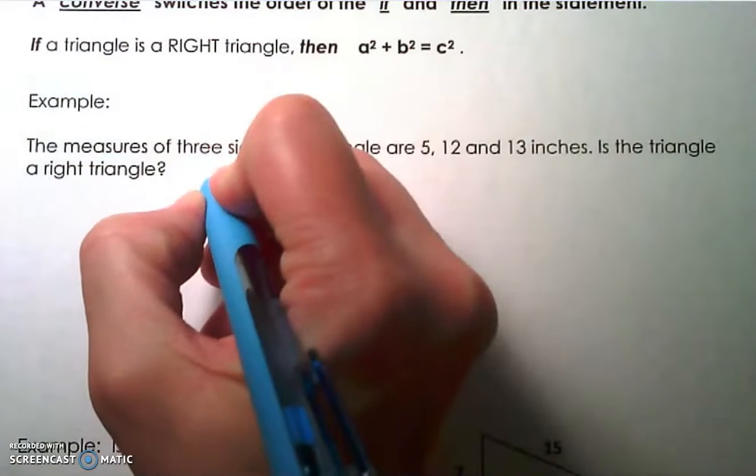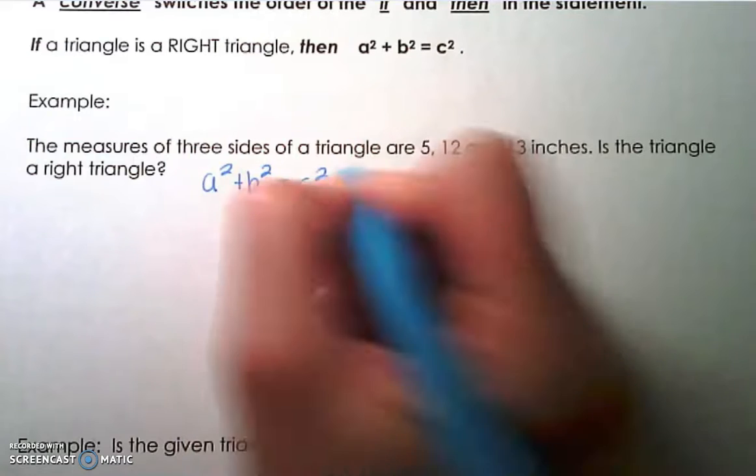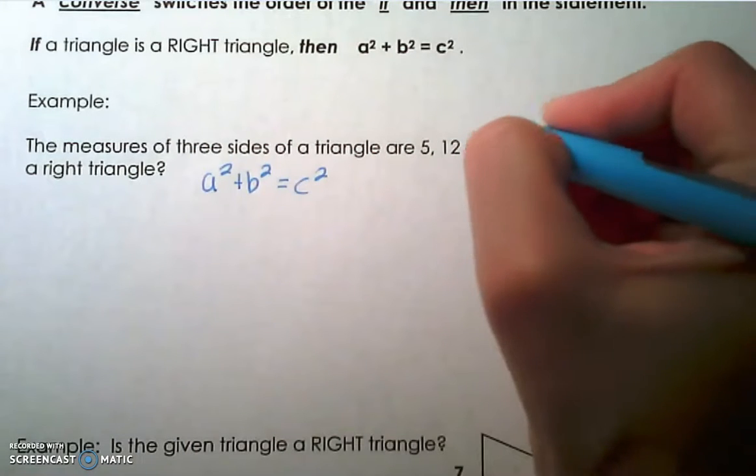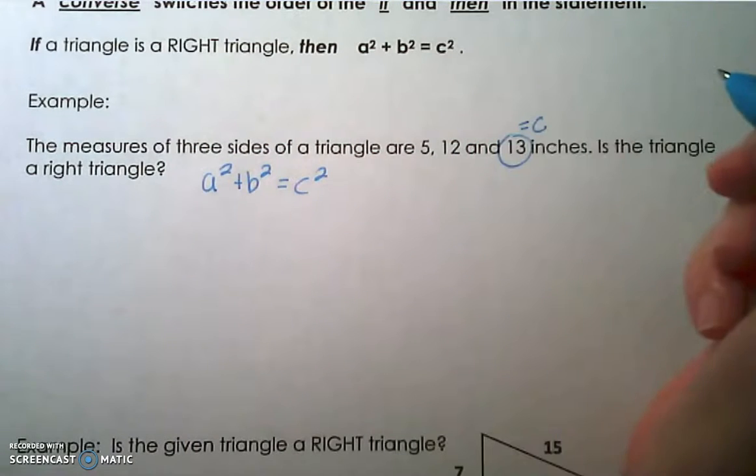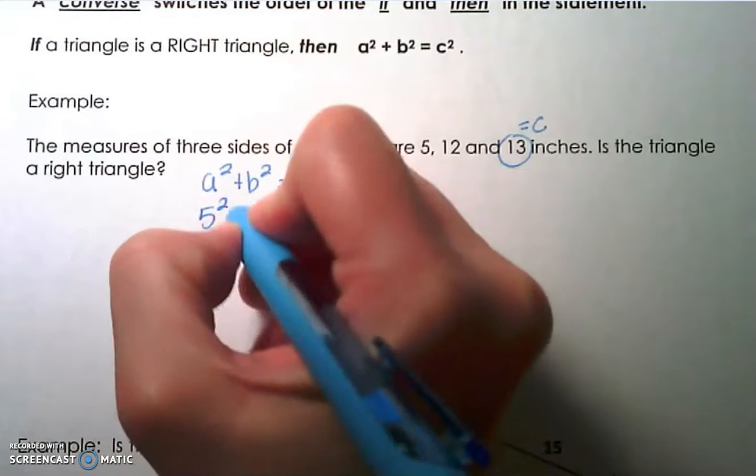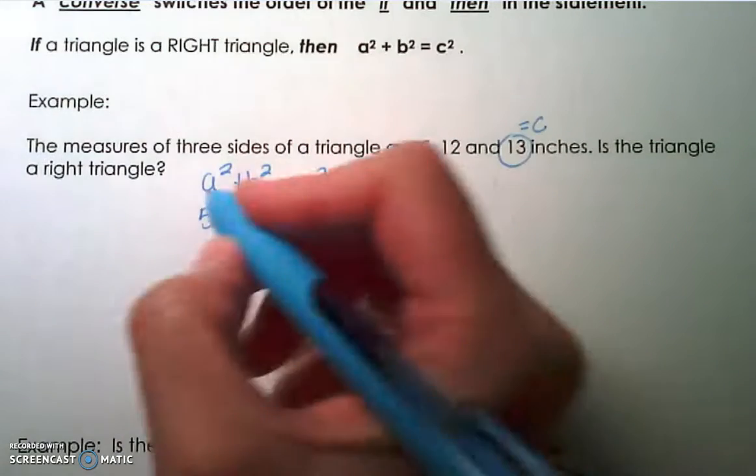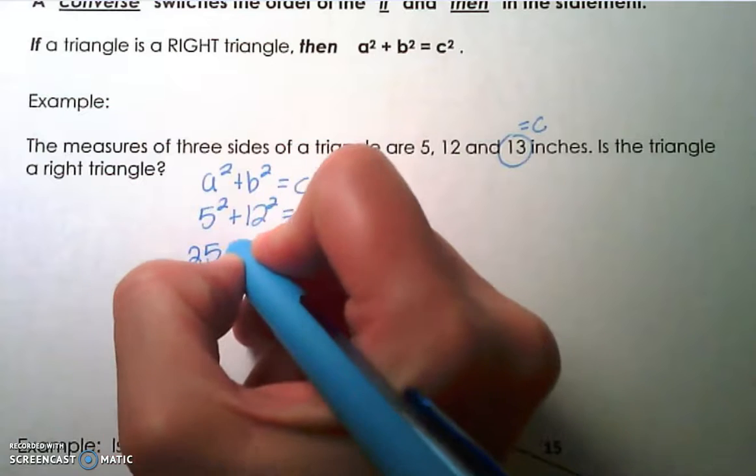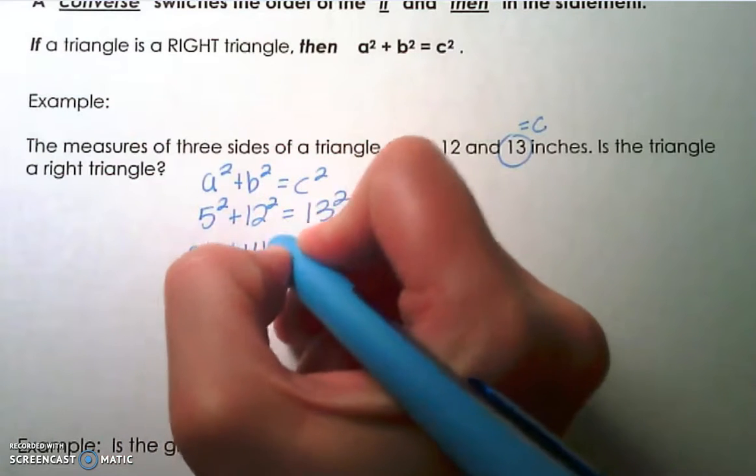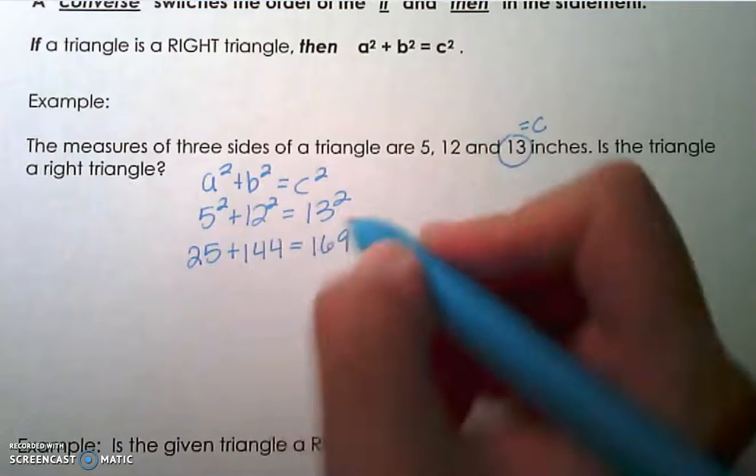We're going to do a squared plus b squared equals c squared. Recall that the largest number has to equal c because the hypotenuse is the longest side of the right triangle and c is the variable we use to represent that number. So we would do 5 squared plus 12 squared equals 13 squared. Go ahead and square those numbers. We get 5 squared is 25 plus 12 squared is 144 equals 13 squared is 169.